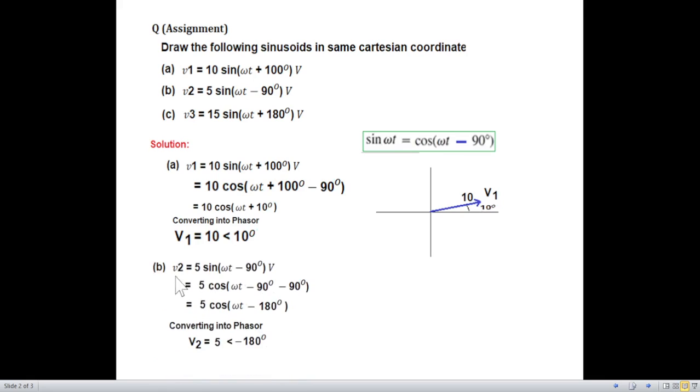Now let's see the second signal. We are following the same technique. This 5 sine omega t minus 90. To convert into cosine, we have to subtract minus 90. So this will become minus 180. And in phasor, we take the magnitude and this angle minus 180. And now we plot this on the same plot, particularly like this.